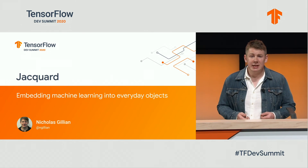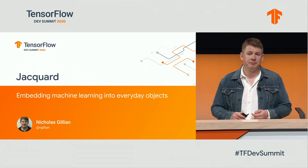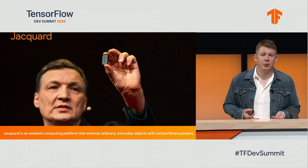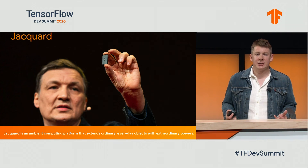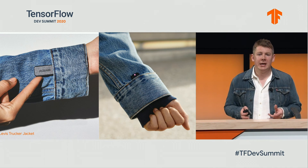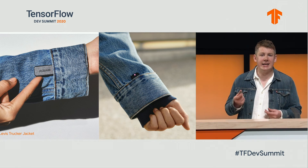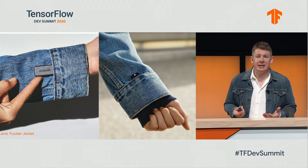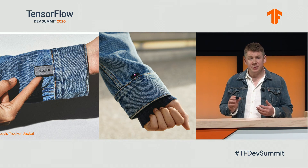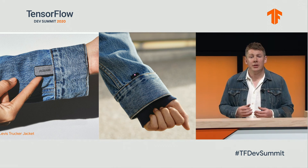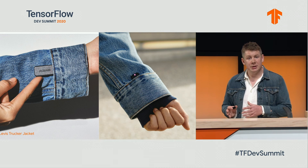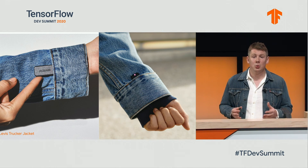Let me tell you a little bit about the Jacquard platform. Jacquard is a machine learning powered ambient computing platform that extends everyday objects with extraordinary powers. At the core of the platform is the Jacquard tag — a tiny embedded computer that can be seamlessly integrated into everyday objects like your favorite jacket, backpack, or pair of shoes. The tag features a small embedded ARM processor that allows us to run ML models directly on the tag, with only sparse gesture or motion predictions being emitted via BLE to your phone when detected.